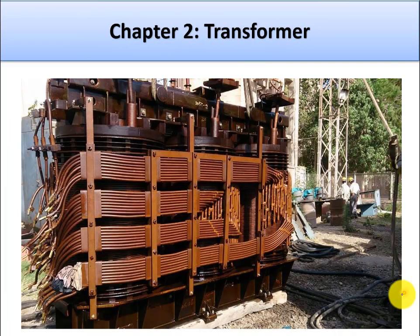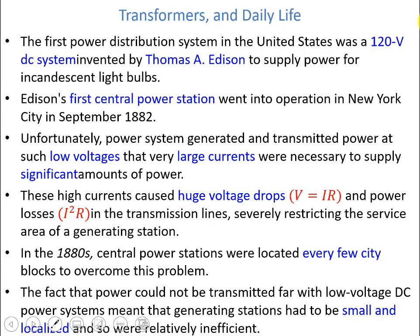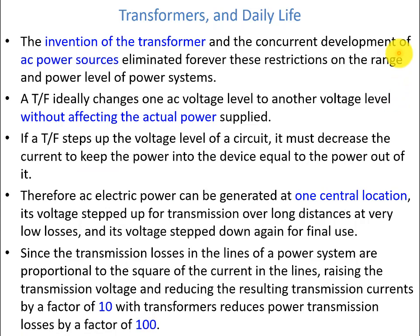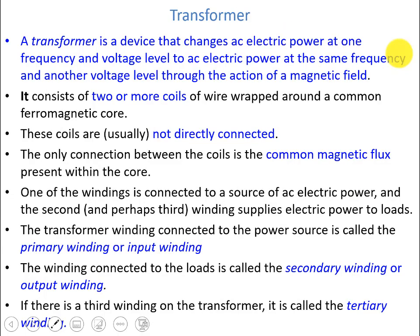Today we continue our chapter on transformers. We have seen that DC voltage transmission lines had a problem of very huge I-squared-R losses, and that's why it was not possible to transmit DC voltages over long distances. The invention of the transformer makes it easier to distribute power over long distances — we can generate power at one central location, transmit it over long distances, and the I-squared-R losses are reduced tremendously.